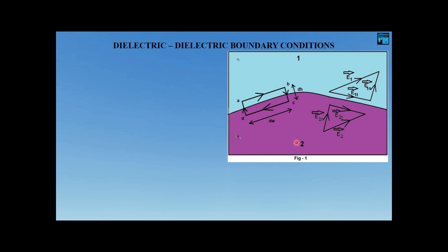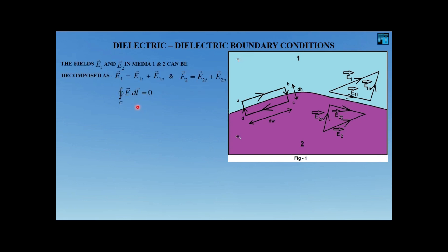In Figure 1, the upper region is dielectric medium 2 with permittivity epsilon-2, and the lower region is dielectric medium 1 with permittivity epsilon-1. The fields in medium 1 are denoted E1 and D1, and in medium 2 they are E2 and D2. Each can be decomposed into tangential and normal components.